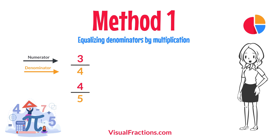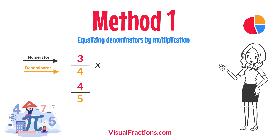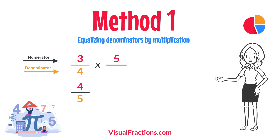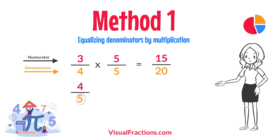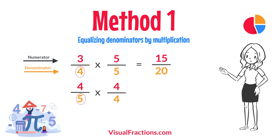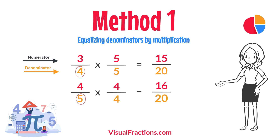For 3 quarters, multiply both the numerator and the denominator by 5 — the denominator of 4 fifths. This gives us 15 twentieths. For 4 fifths, multiply both the numerator and the denominator by 4 — the denominator of 3 quarters. This results in 16 twentieths.